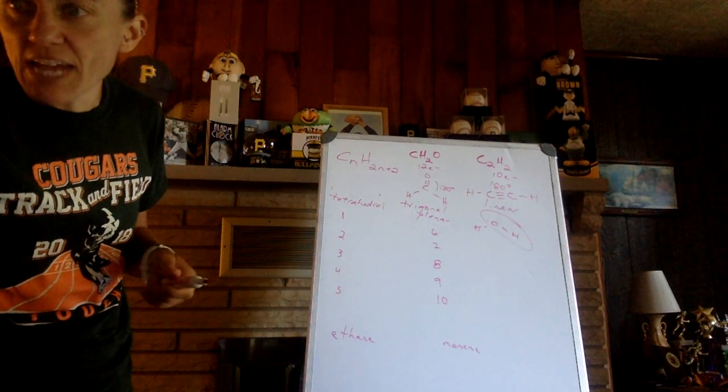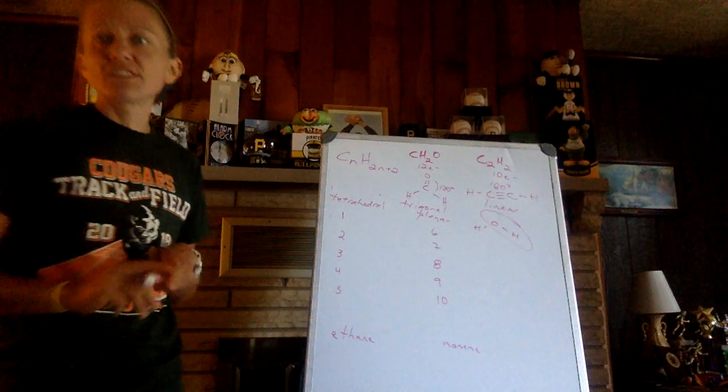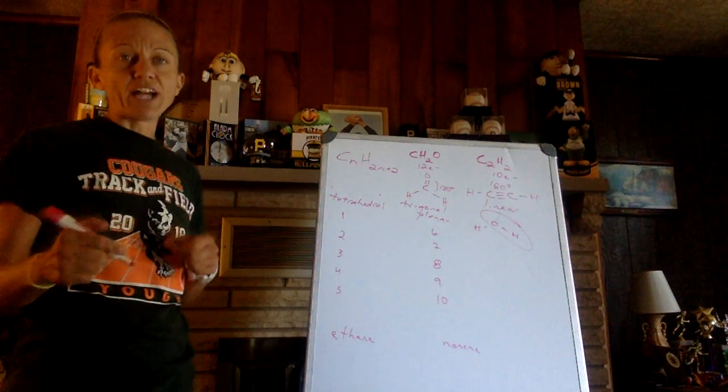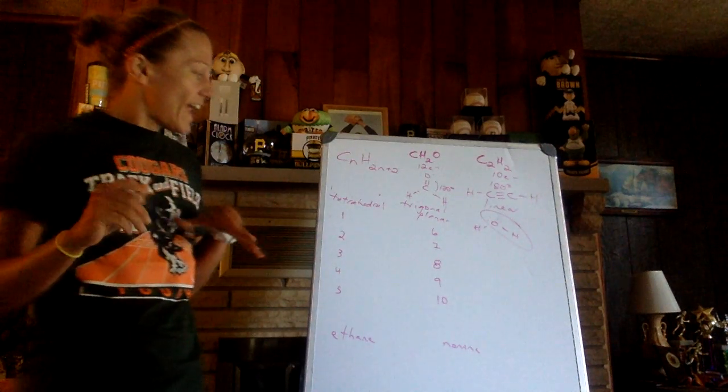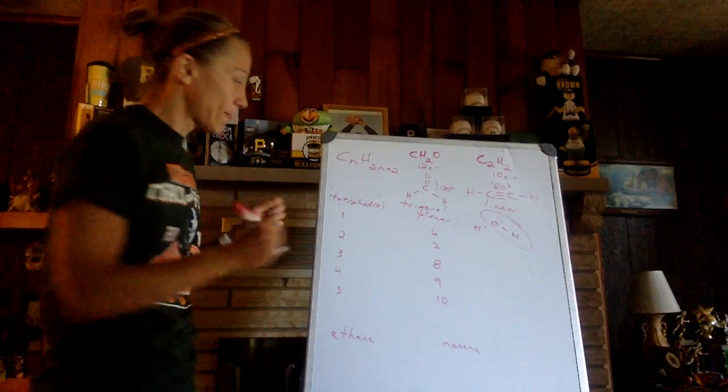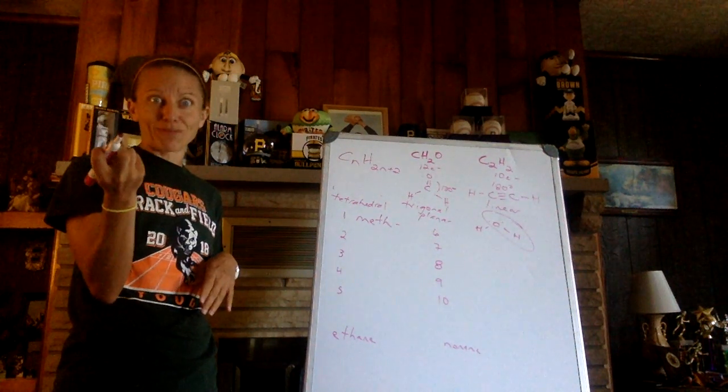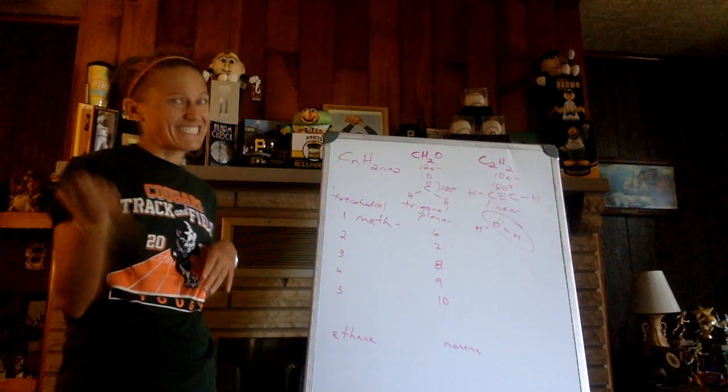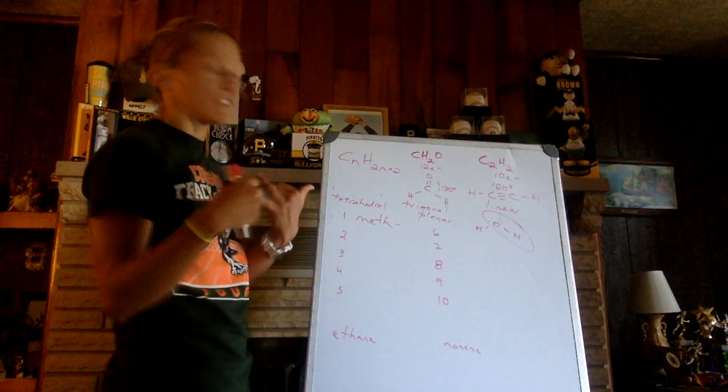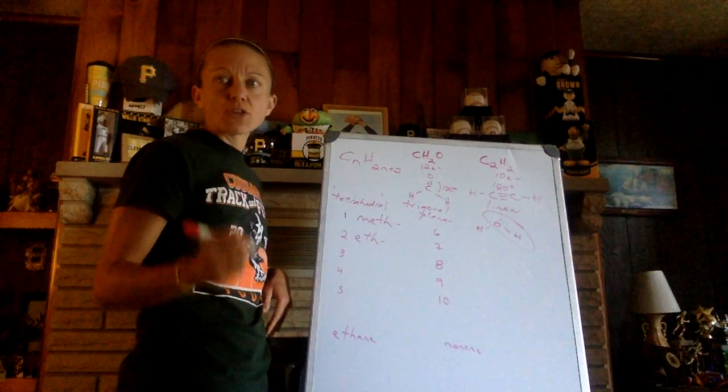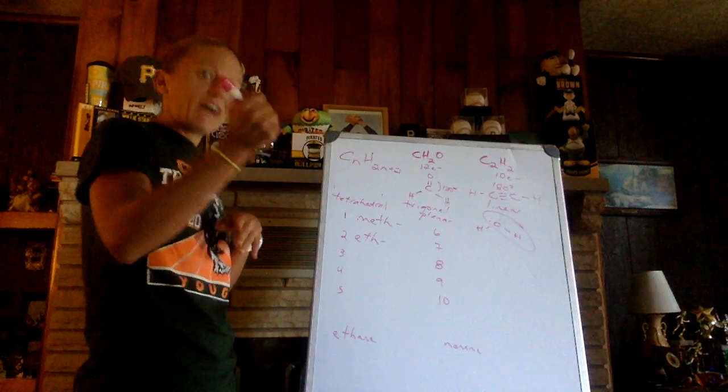Now the way we name alkanes is based on their longest carbon chain. When I look at these, if I had a single carbon, we would use the prefix meth. If I have two carbons side by side, I would call them ethane. Those are my prefixes. The first four don't make a lot of sense. They don't mean anything number-wise. After that, it starts looking like geometry.